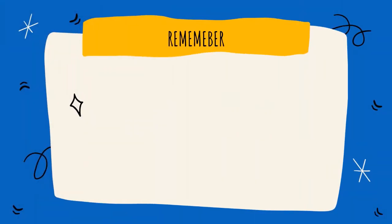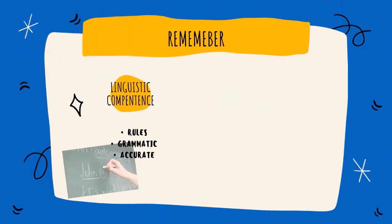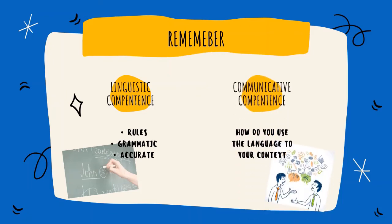So, remember: linguistic competence refers to the rules, the grammatical, and how to write and construct a sentence accurately. And communicative competence is how you use the language — the knowledge of the language you speak — according to your context.